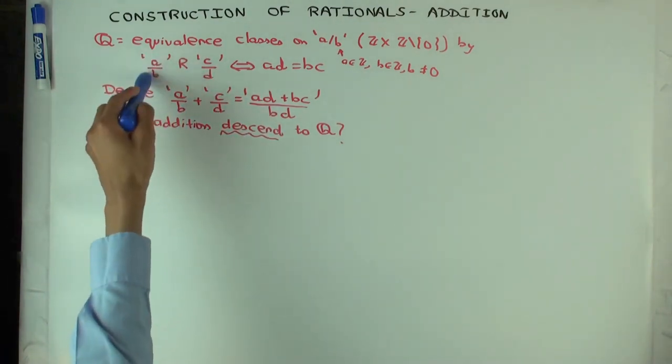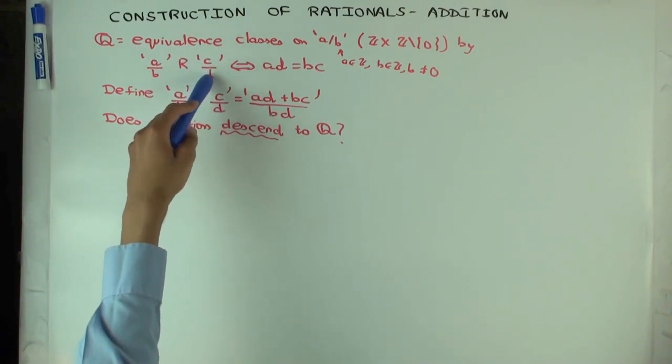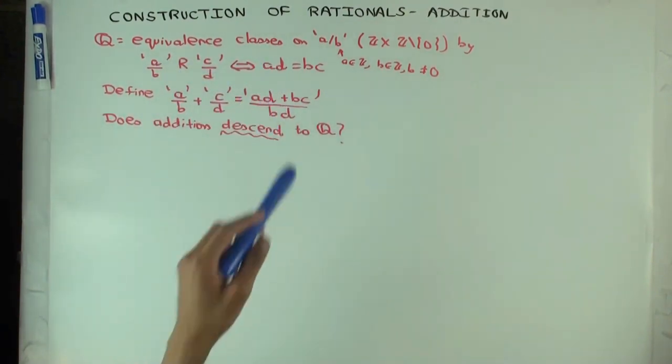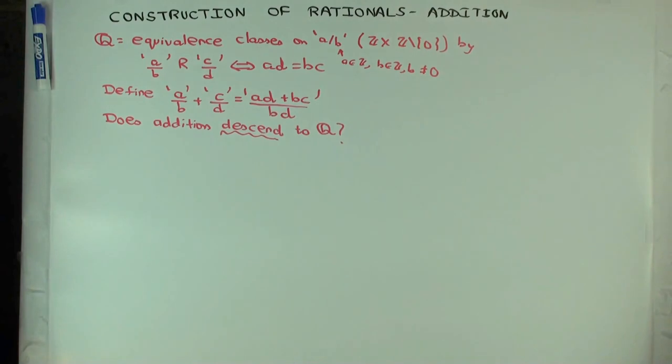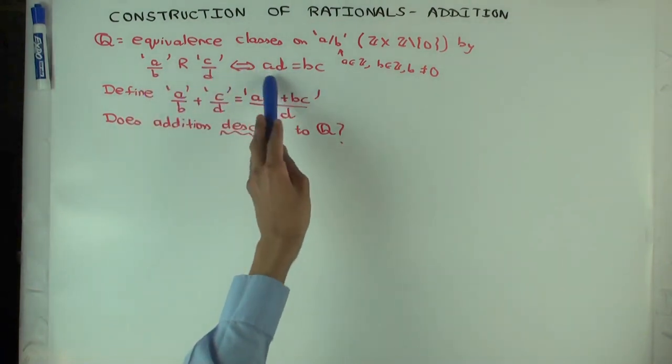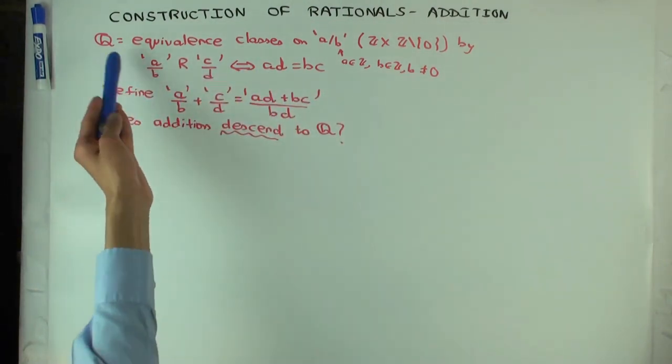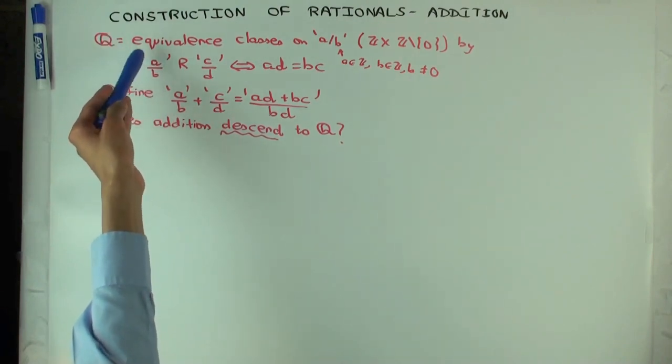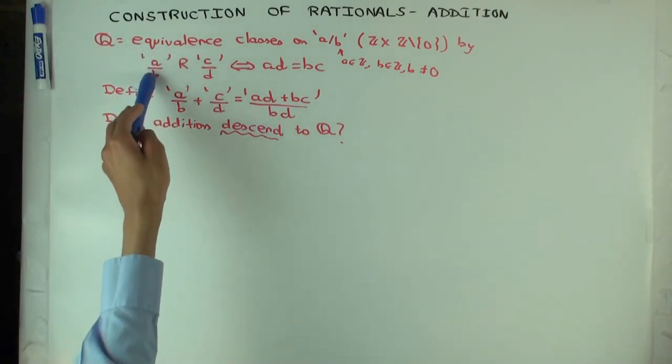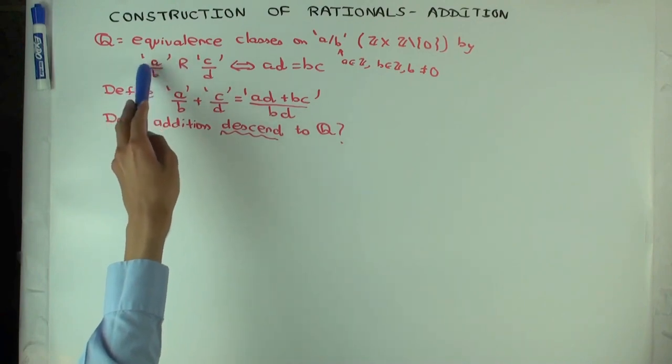And I say that two numbers quote a over b and quote c over d are related if ad equals bc. I'll remind you that it's not totally obvious, but it can be shown that this is an equivalence relation. And then the equivalence classes of that are rational numbers.